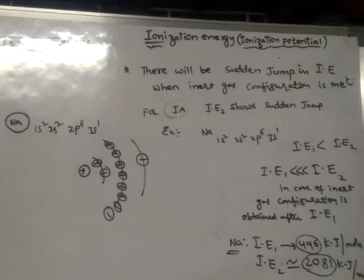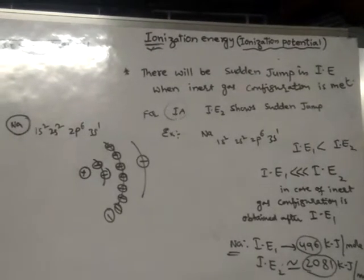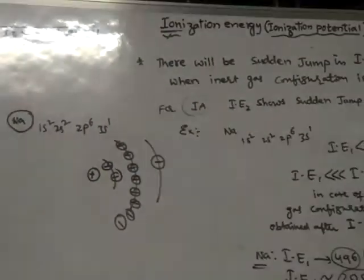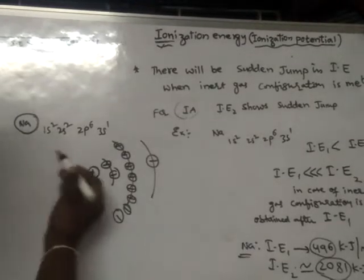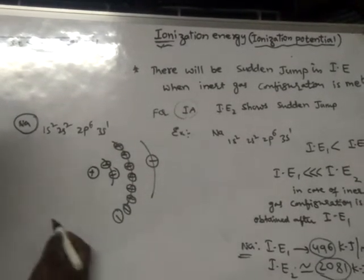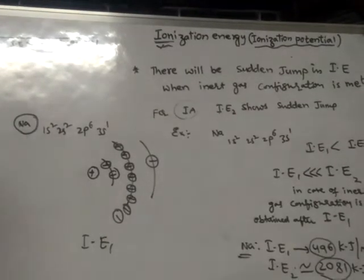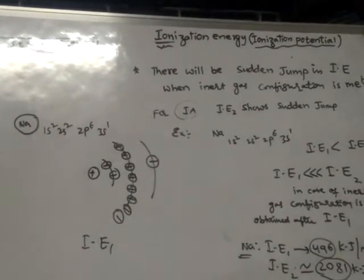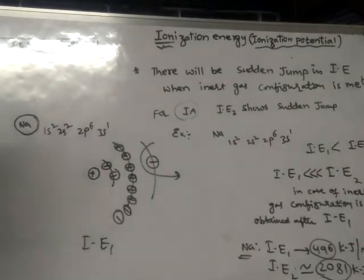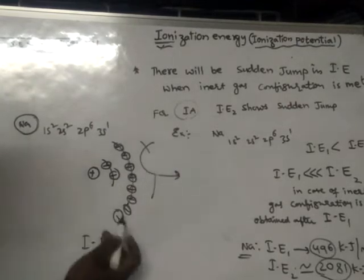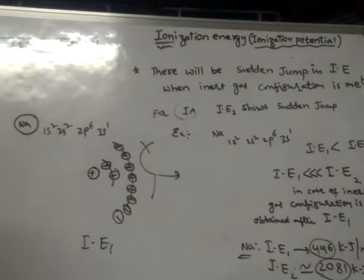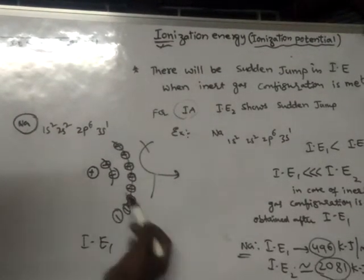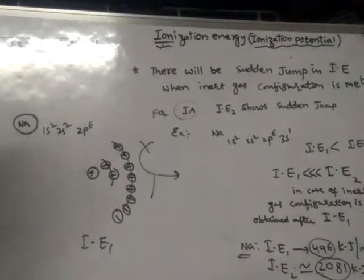By spending the first ionization energy, I can remove one electron from sodium. After removal of that first electron, the atom gets the inert gas configuration, because now the second orbit becomes the outermost orbit, which contains eight electrons.